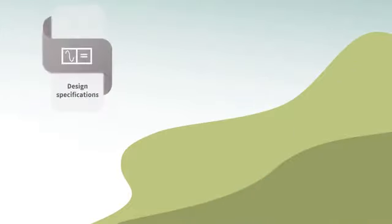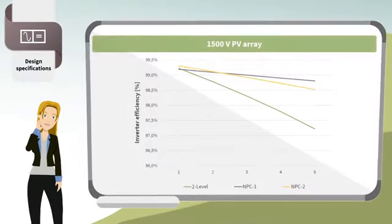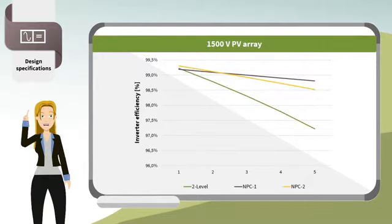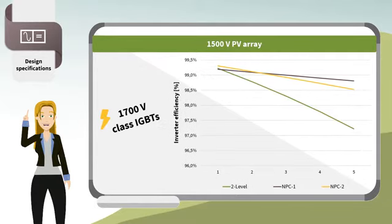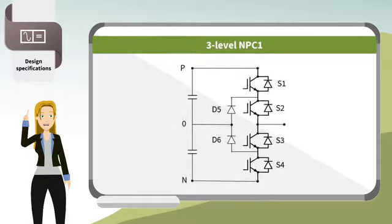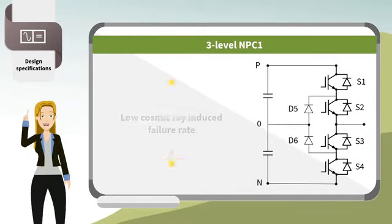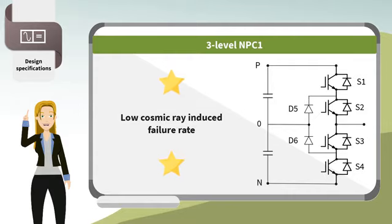Moving on to central inverter design specifications. For the 1500 volt PV array, a two-level or neutral point clamp 2 (NPC2) topology using 1700 volt IGBTs are the preferred choice for 2 to 4 kilohertz switching frequency operation. The three-level NPC1 topology is widely used due to its low cosmic ray induced failure rate, in spite of increased complexity during reactive power mode operation and increased system cost.